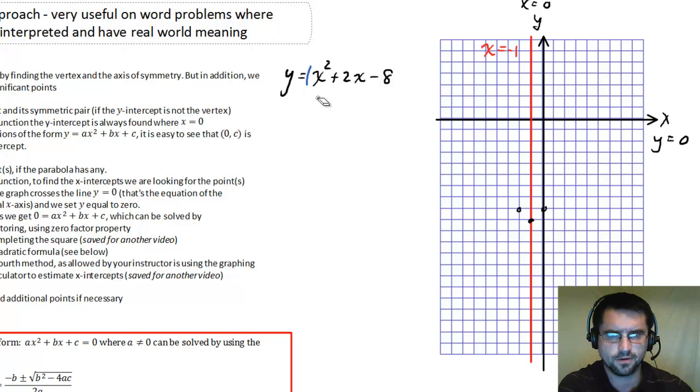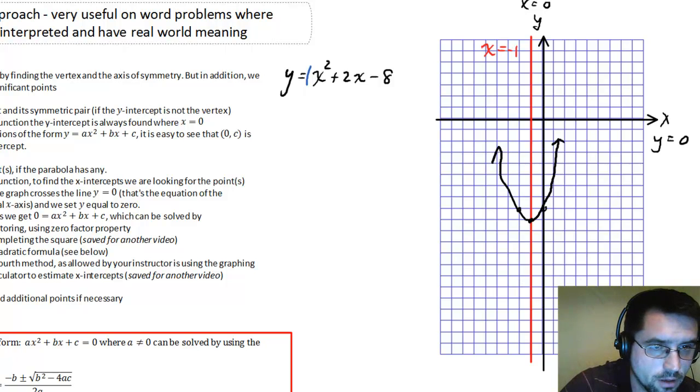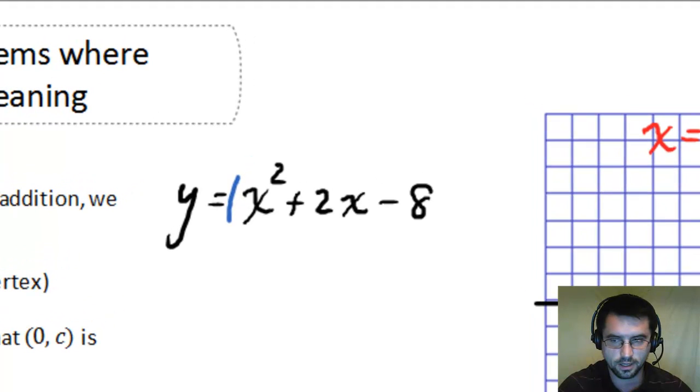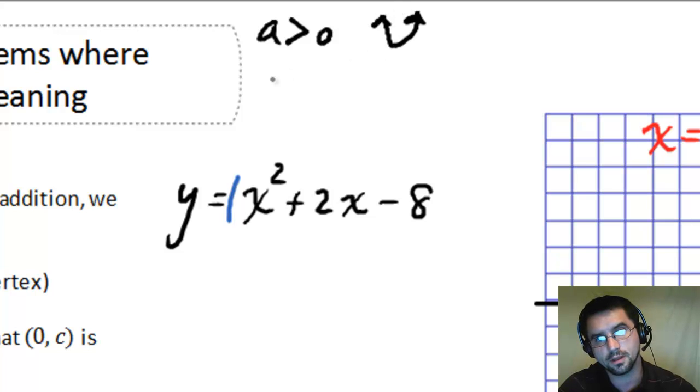Next, I want to figure out if this thing has any x intercepts. Now it should be pretty clear because I've already graphed three points that this thing is opening up. So this is going to cross somewhere, right? Over here, over here. It's going to cross. So it definitely has two x intercepts. But what if, let's say, what if I didn't know that yet? What if I hadn't graphed anything over there? How could I tell? Well, the answer to that is right here. If the leading coefficient is positive, then the graph opens up. If the leading coefficient is negative, then the graph opens down.